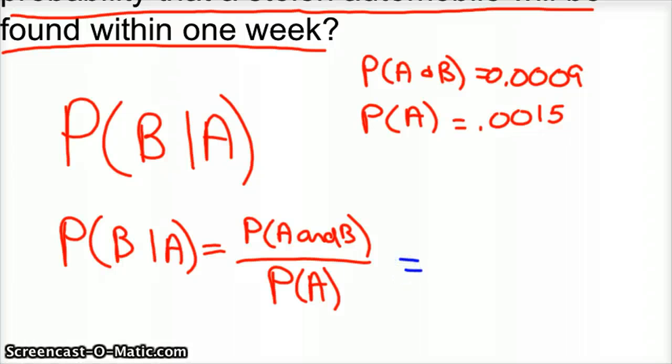So, well, we've got the two things that we have. The probability of it being stolen, of your car being stolen, and it being found within a week is 0.0009.